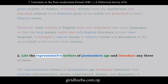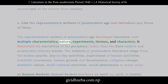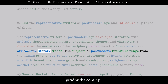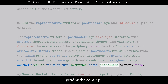Question 2: List the representative writers of the postmodern age and introduce any three of them. The representative writers of the postmodern age developed literature with multiple characteristics, nature, experiments, themes, and characters. It flourished the narratives of the periphery rather than the Eurocentric and aristocratic literary trends. The subjects of postmodern literature range from the human psyche, day-to-day activities, scientific inventions, human growth and development, religious change, aesthetic values, multicultural activities, and social phenomena.